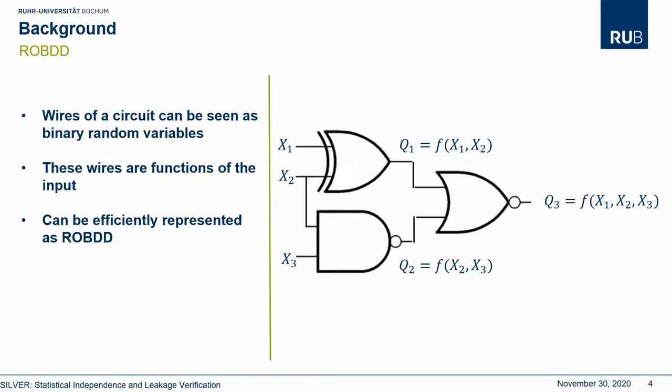Now let me give a quick overview of how we use the ROBDDs. On the right, you can see a very simple digital circuit realizing a boolean function. Here, every wire can be seen as a binary random variable, which takes either 0 or 1 depending on the input to the circuit. So q1 for example is a function of x1 and x2, while q2 is a function of x2 and x3, and the output depends on all three random variables. As a consequence, each wire is a boolean function, which can be represented efficiently as an ROBDD.